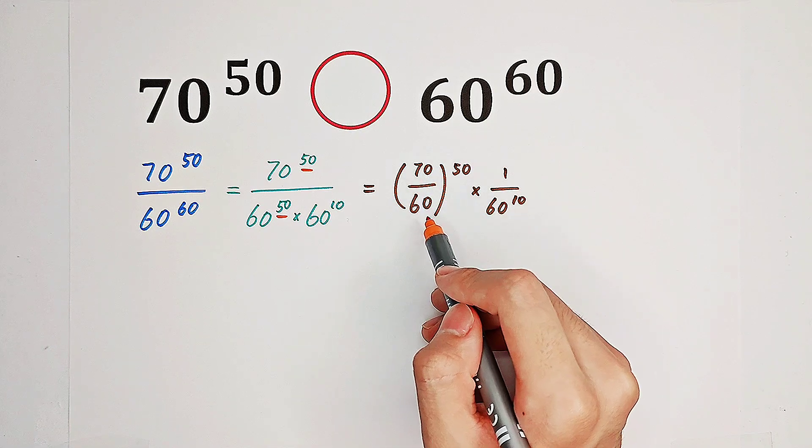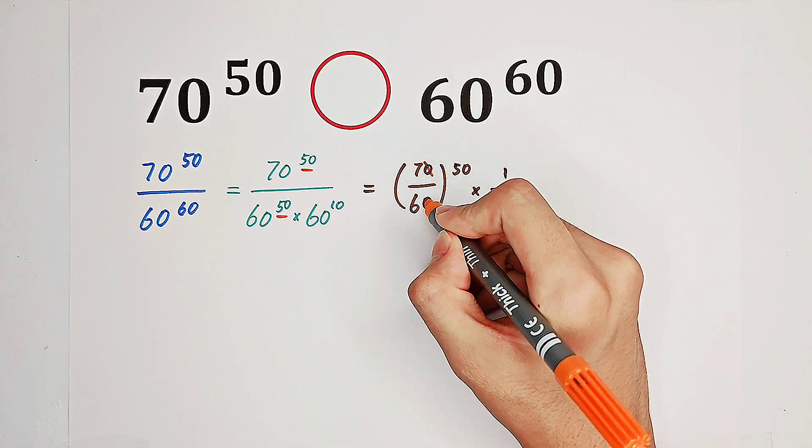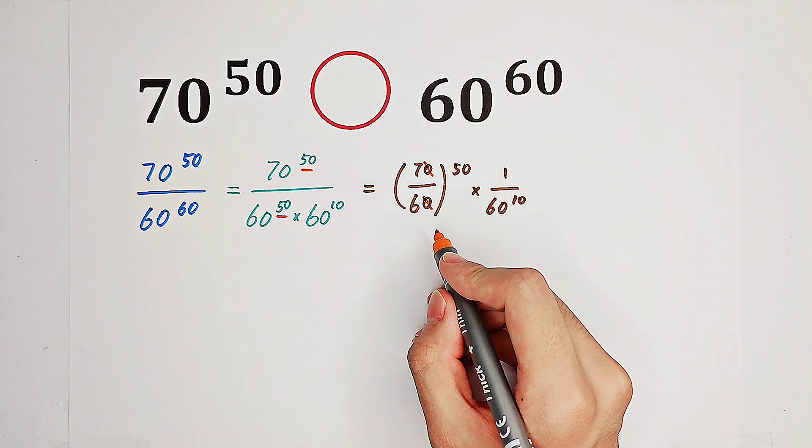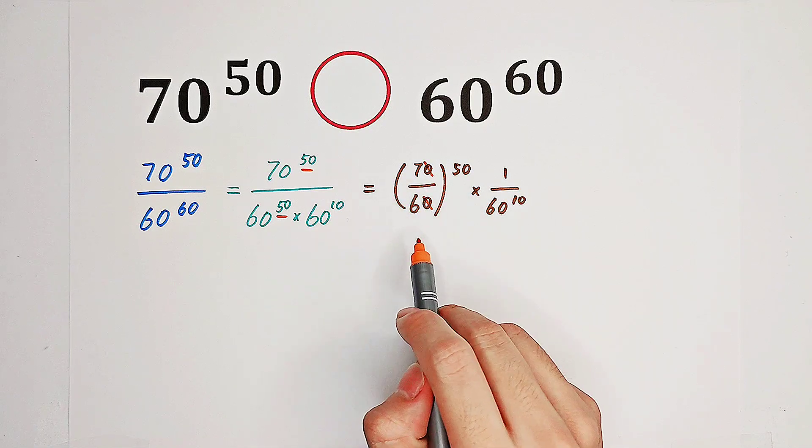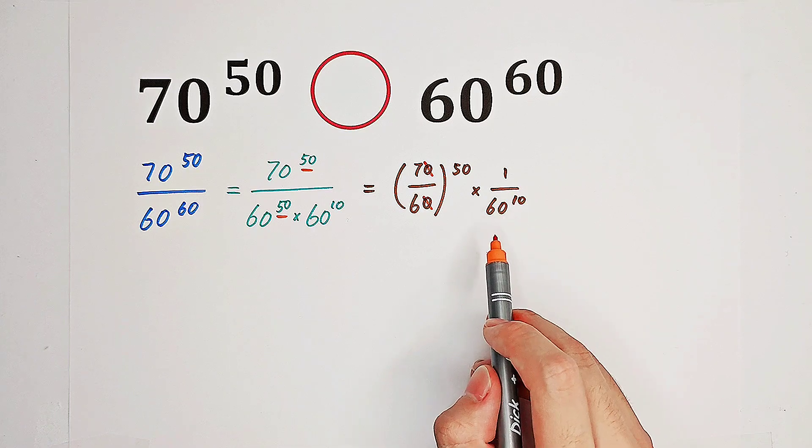In this fraction, we can divide the numerator and the denominator by 10. So, 70 over 60 is just 7 over 6. So this one is 7 over 6 to the power of 50 times 1 over 60 to the power of 10.